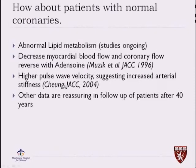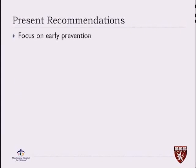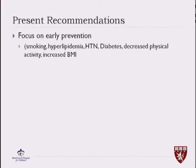Most patients who present have either normal coronaries or very mild dilation if they are treated. We know those patients have abnormal lipid metabolism, decreased myocardial blood flow and coronary flow with adenosine, and an abnormal reactivity of their coronaries as they grow older. What we do for patients with Kawasaki disease is focus on early prevention — asking parents to prevent smoking, screening for hyperlipidemia, treating hypertension and diabetes early, promoting a healthy lifestyle, and preventing obesity.